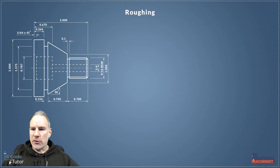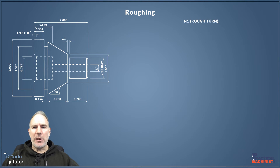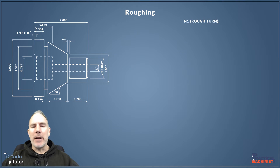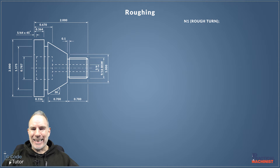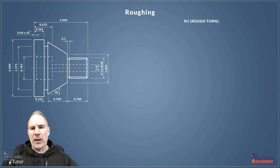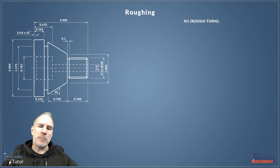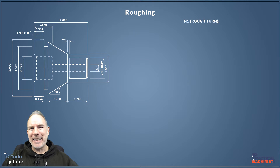Now we're going to start writing the roughing sequence — the first part of proper programming. We start with N1 and then 'rough turn' in brackets as an operator's note, which the machine does not read. N1 is purely a way for me to search through the program to find my rough turn. We finish with a semicolon as our end of block, which tells the machine this line has finished and to move on to the next.